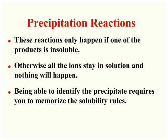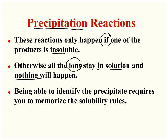When you're dealing with double replacement reactions, or as they are commonly called precipitation reactions, you need to be aware that these reactions are only going to happen if one of the products is insoluble. If all of the ions were to stay in solution, then nothing would happen. So one of your products has to be insoluble.